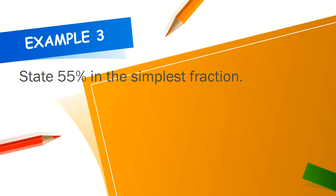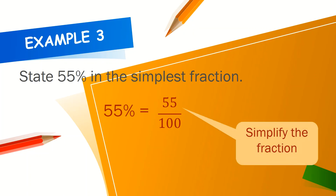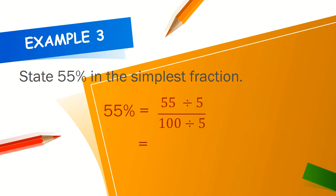Example 3: 55 over 100. Simplify the fraction by dividing the denominator and numerator by 5. The answer will be 11 over 20.